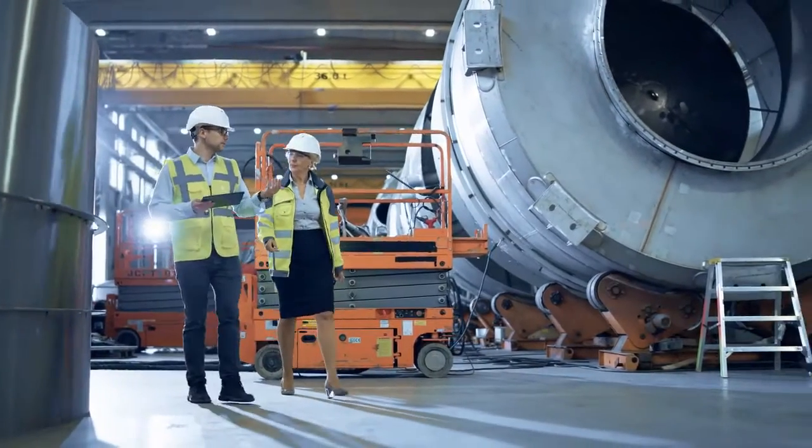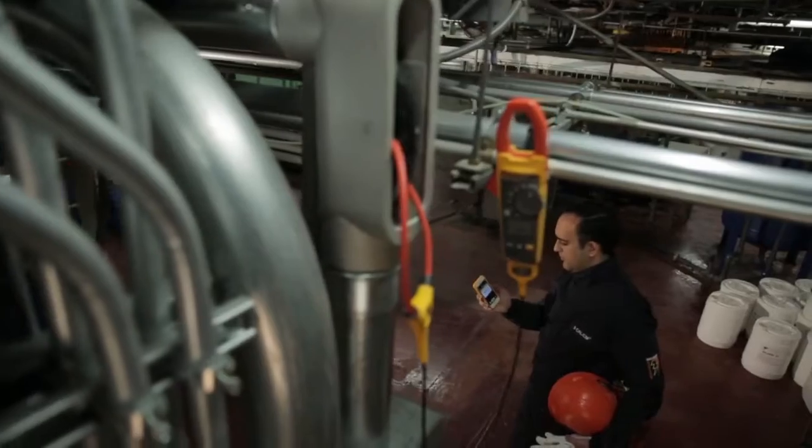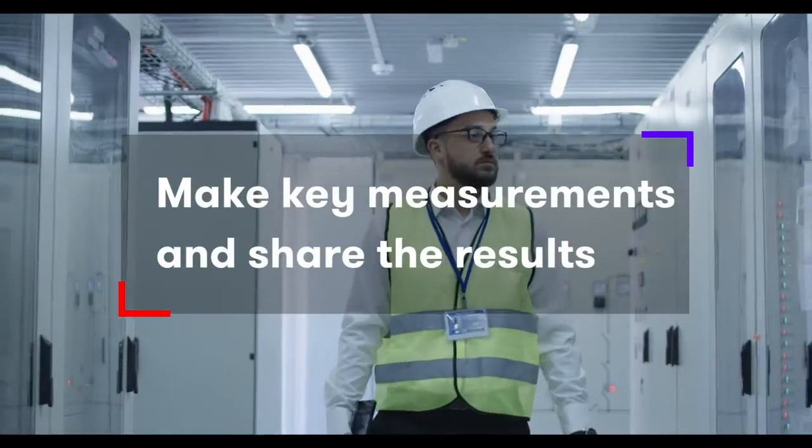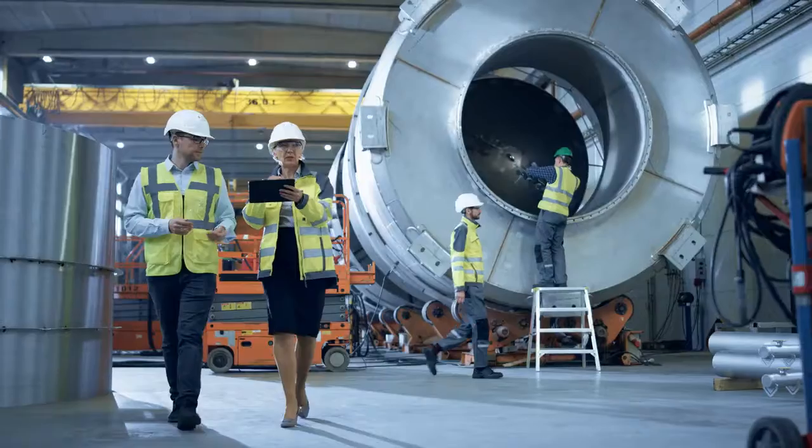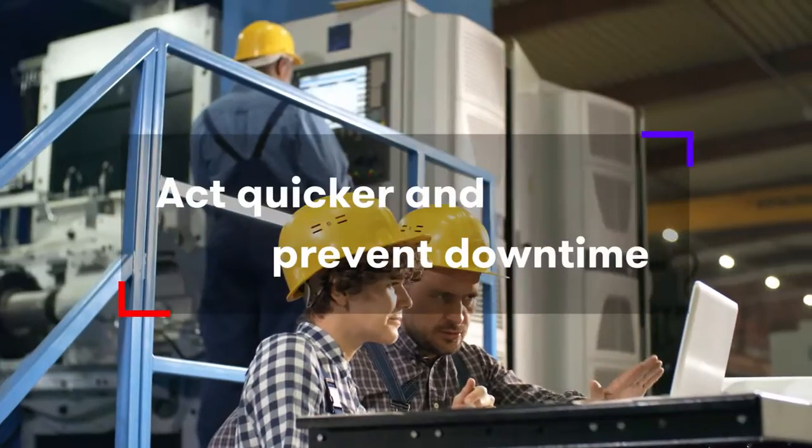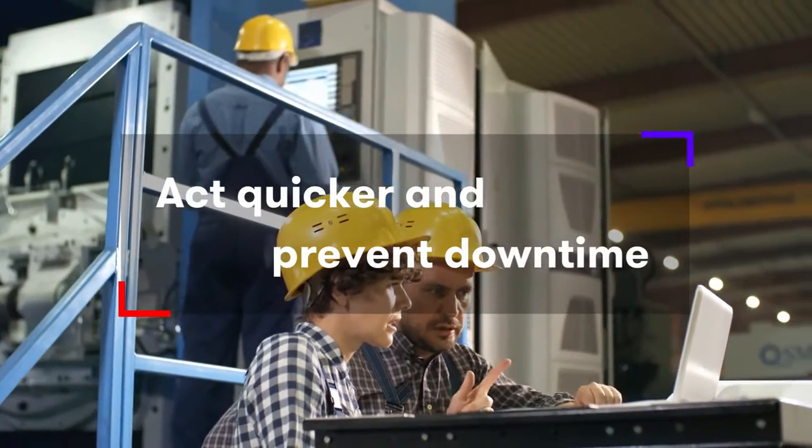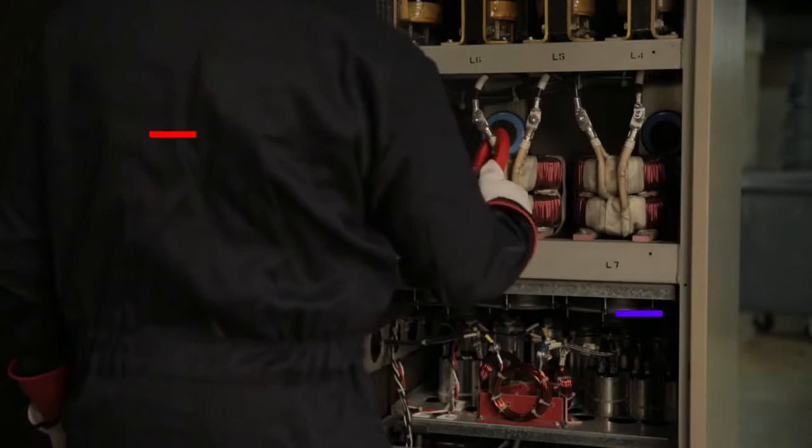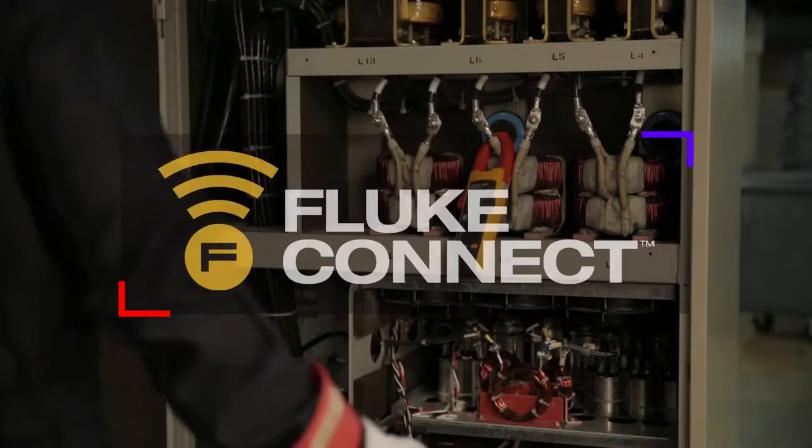Connected Test and Measurement is equipment that can temporarily or permanently capture information on how a process, piece of equipment, building or individual part is performing. This information can then be shared either locally or via the cloud. This allows for better insight and improved, faster decision-making in terms of plant maintenance and process improvement.